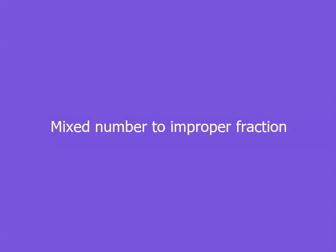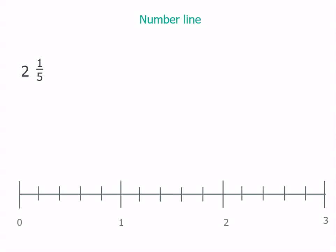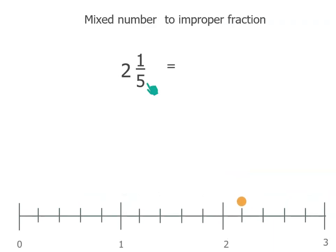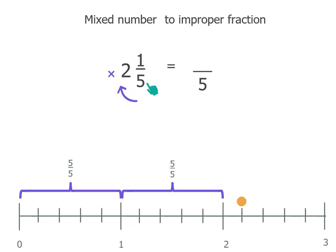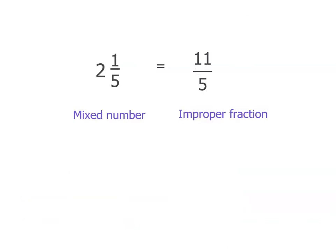Let's convert from a mixed number to an improper fraction. Let's say we've got 2 and 1 fifth. We have a number line here with fifths in between the whole numbers. 2 is there, and 2 and 1 fifth is there. Because we've got 2 and 1 fifth, the 1 fifth tells us our improper fraction will have 5 as its denominator. We multiply that 5 by our whole number — 5 twos are 10. There are 5 fifths for 1, and another 5 fifths for 2, so altogether that's 10 fifths. But we've also got the 1 fifth, so we add that on: 10 fifths plus 1 fifth. The improper fraction is 11 fifths. So 2 and 1 fifth is the mixed number, and 11 fifths is the improper fraction.